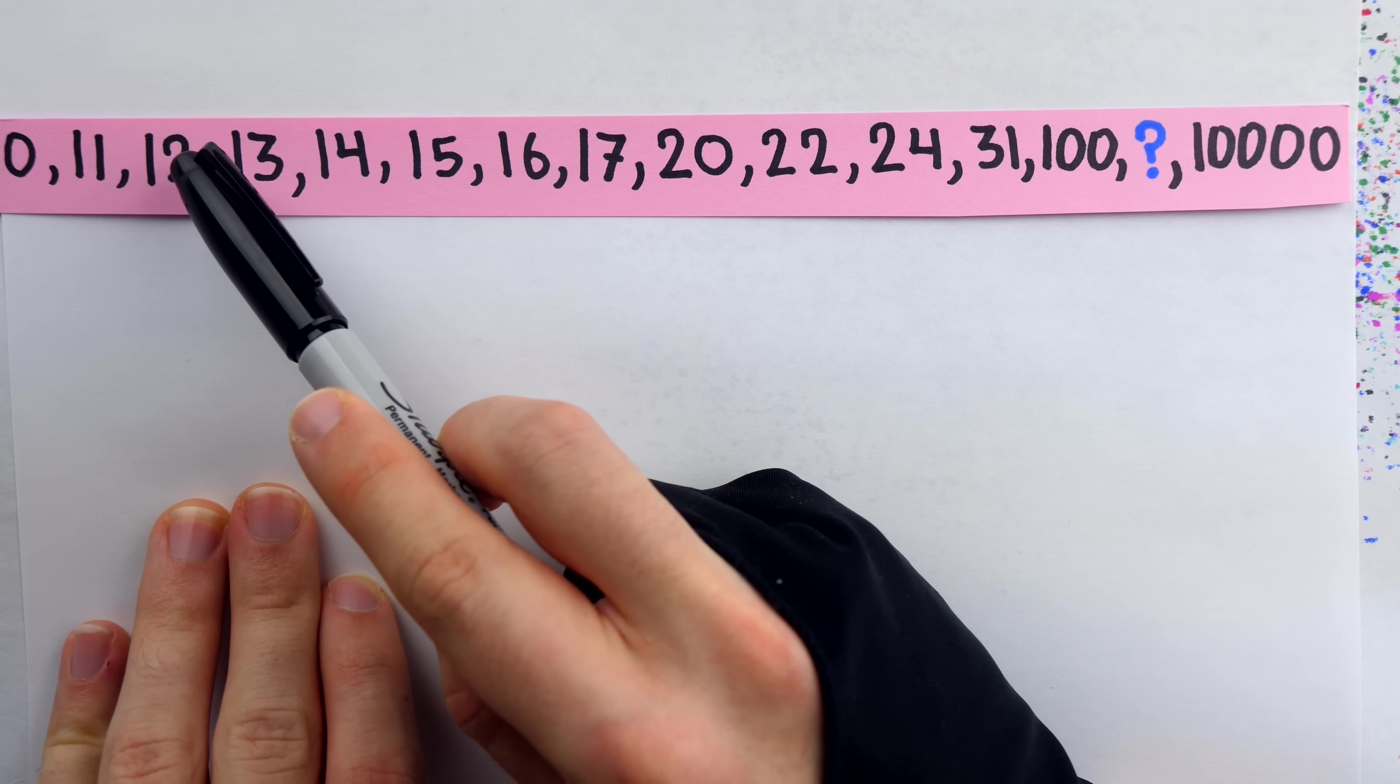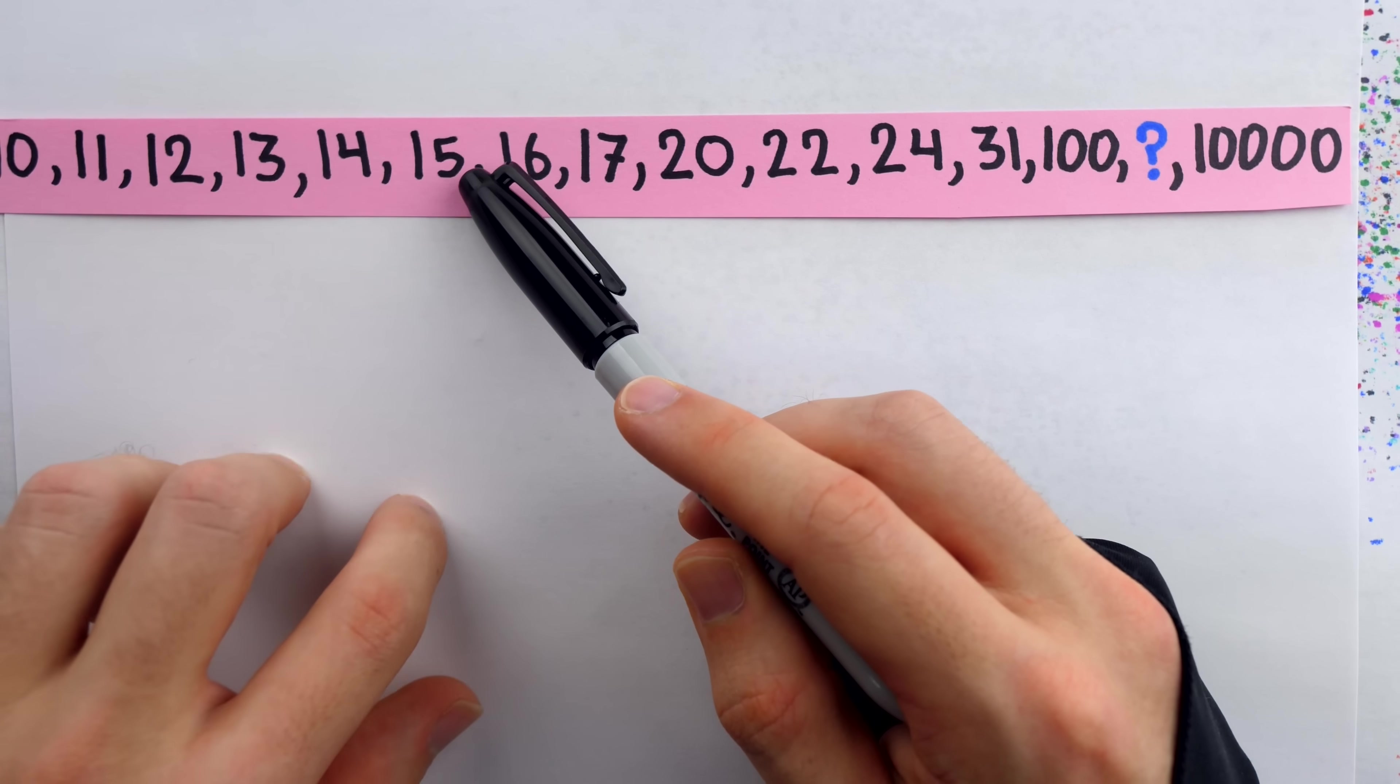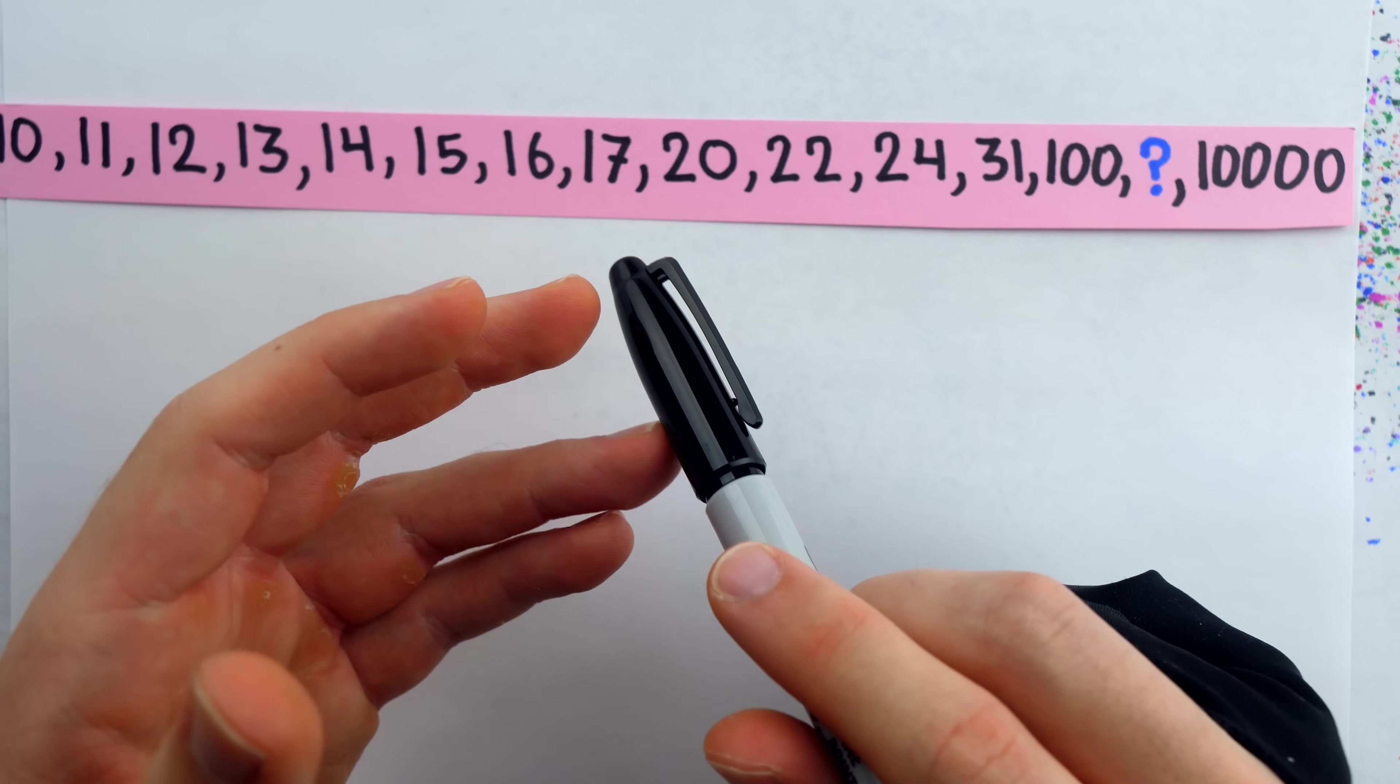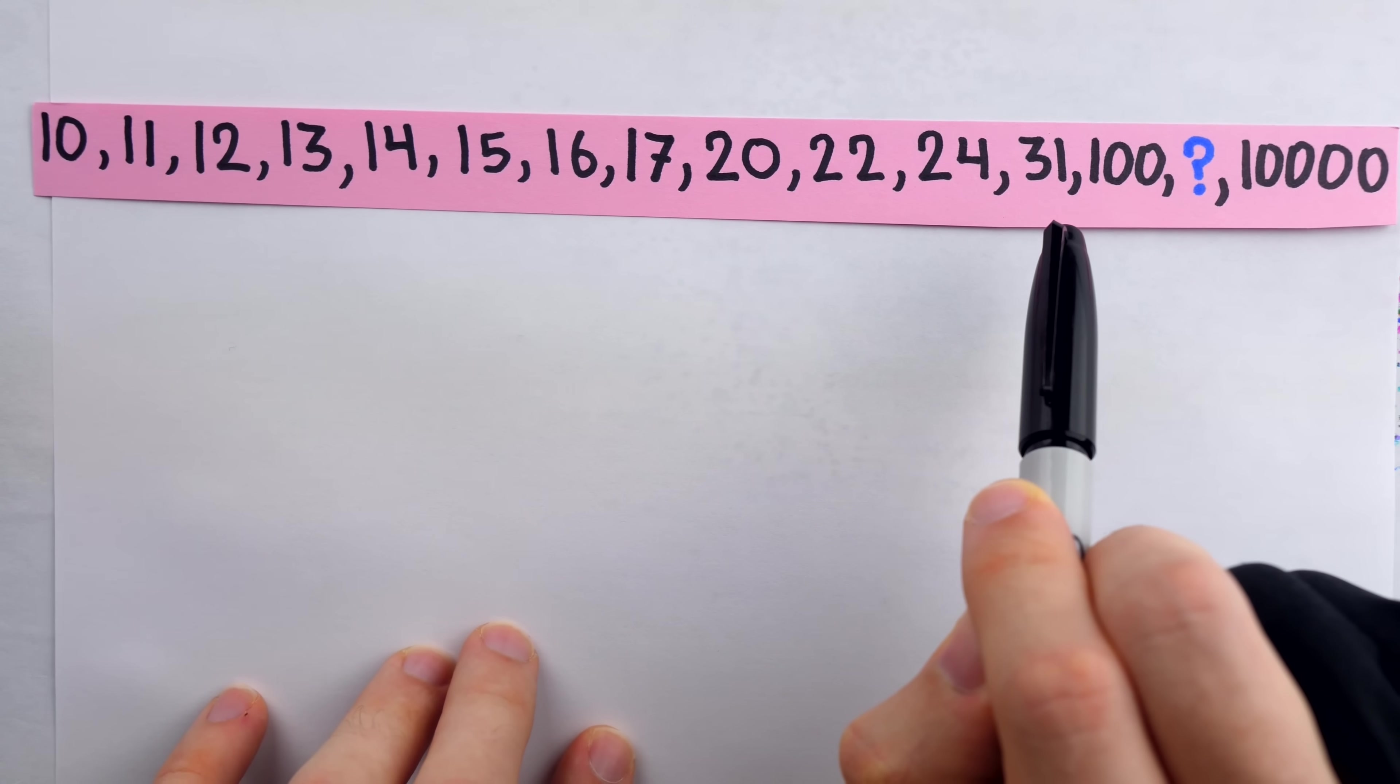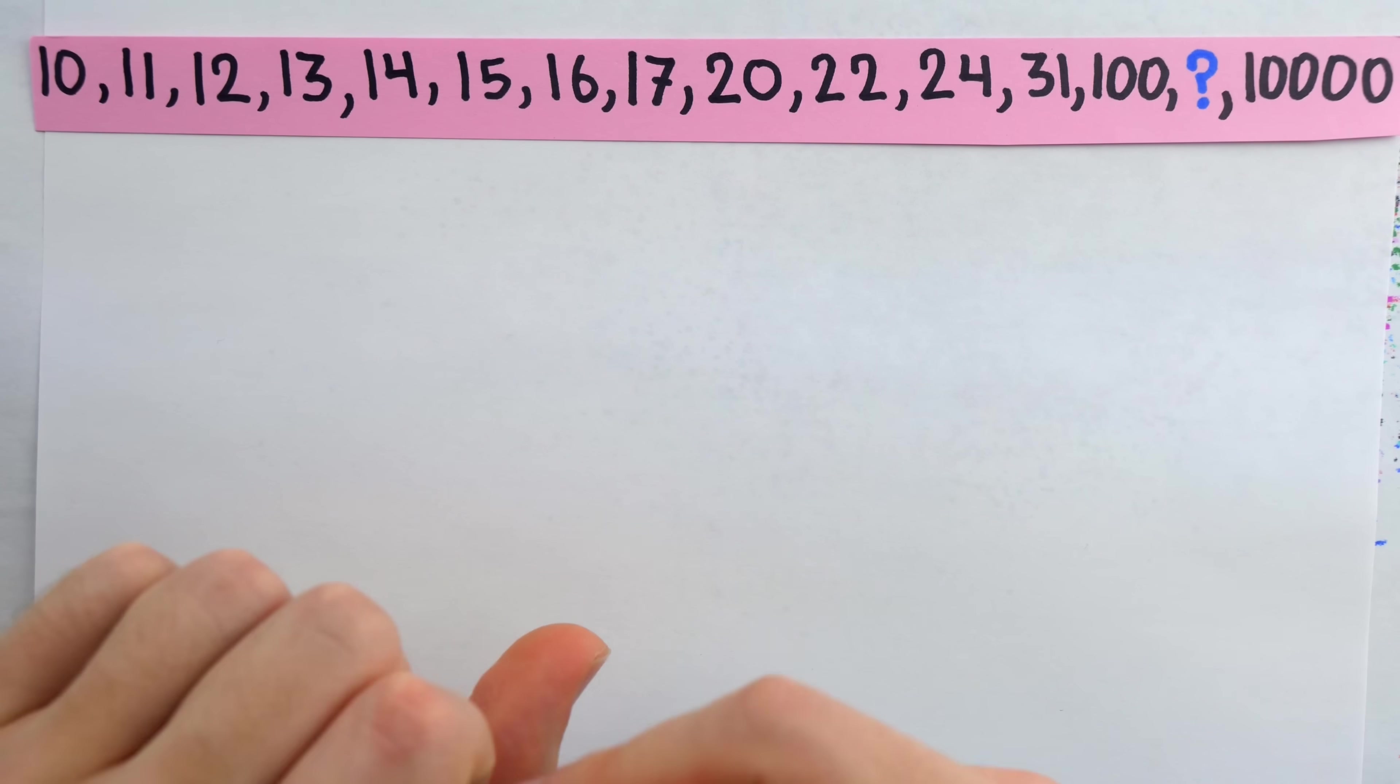The differences between consecutive terms definitely don't suggest anything obvious here, and in fact, it's a mistake to focus too much on the term differences in this case. Your hint for this puzzle is that this sequence is actually constant. Do you have the answer? I'll tell you now.